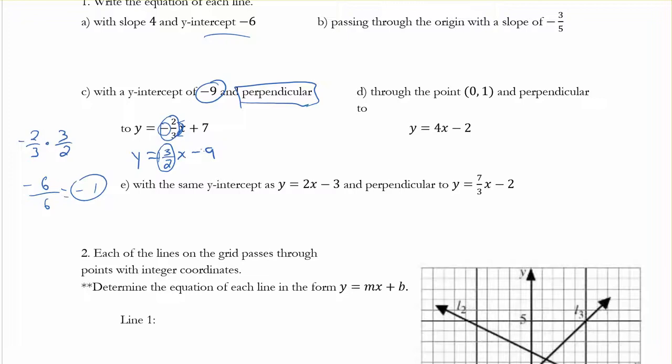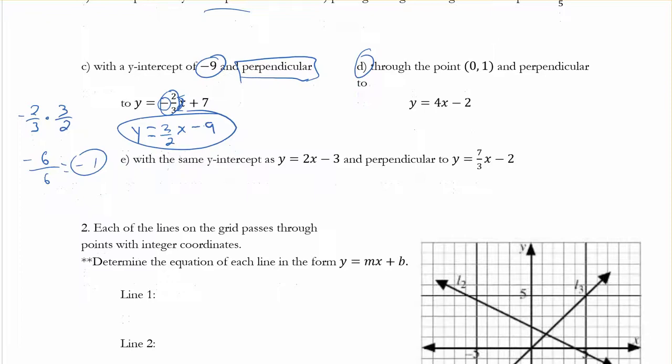3 over 2. Alright, so go ahead and do D, it's similar. I won't give away too much. Same thing for E, I think you guys can figure that one out.